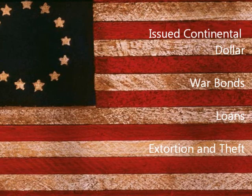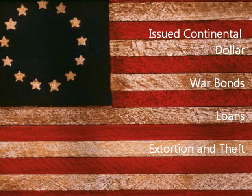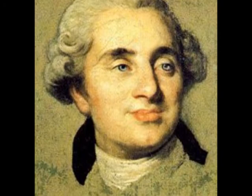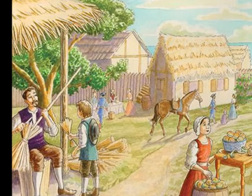Congress improvised by issuing the first Continental dollar to pay for war debt. As long as merchants, bankers, and soldiers would accept the money based on the reputation and goodwill of Congress, the dollar would be valued. Congress also issued war bonds, received loans from France, and lastly, when all other sources were exhausted, Congress turned a blind eye to extortion, theft, and liquidation of assets of those unwilling to lend and give Congress and the Army food and supplies.